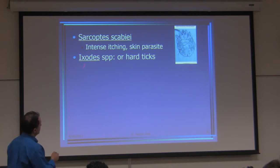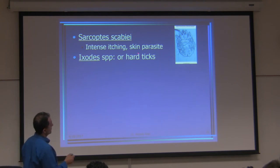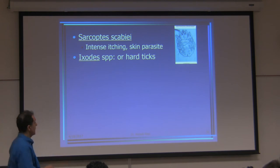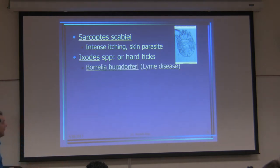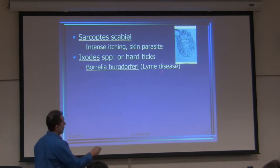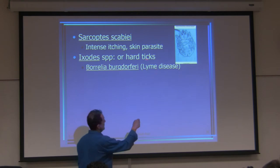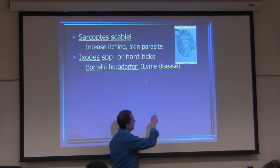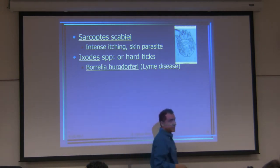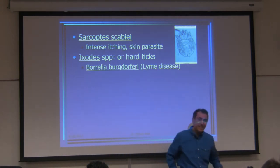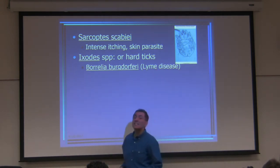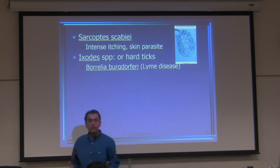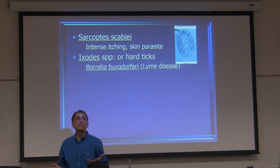And then for Ixodes, you do have some of this in the lab. They're the tick — the deer tick — which transmits Borrelia burgdorferi, causing Lyme disease. Why do they call it Lyme disease? Because there is a city in the state of Connecticut called Lyme.